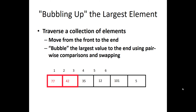In ascending order, the last element will be the largest value; in descending order, the last value will be the least. We are going for ascending order, so we plan to move the largest element to the last position. Comparing 77 and 42, we see that 77 is the largest element and should be on the right side, so we swap both elements.